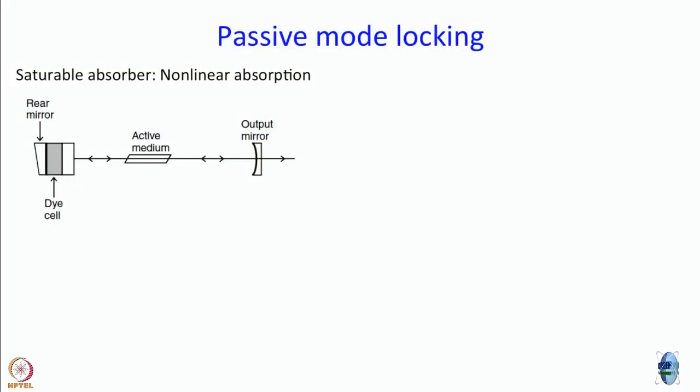Now let us talk about passive modelocking. In passive modelocking, you introduce an element in which you do not apply sound, do not apply voltage, do not apply anything. There is some property of the medium by which modelocking is achieved. The simplest passive modelocking device is a dye cell — a very highly concentrated solution of some dye. The dye has to have some specific property, which we will come to.